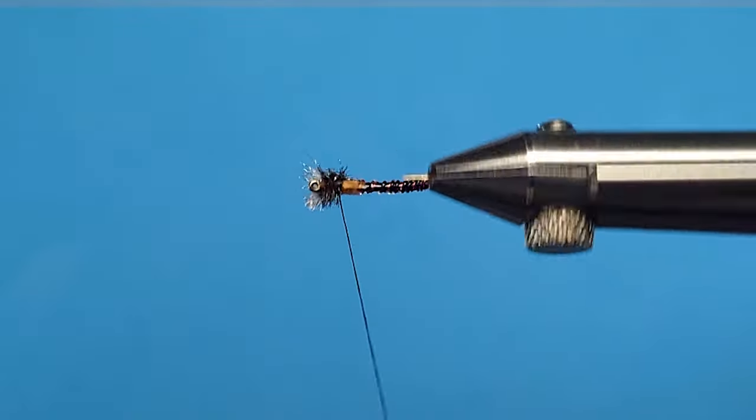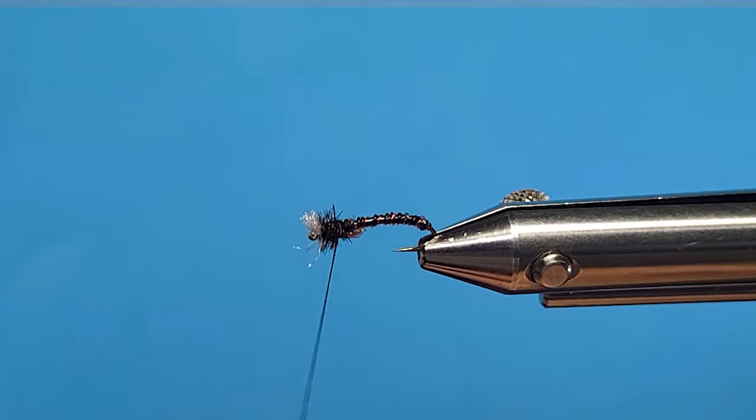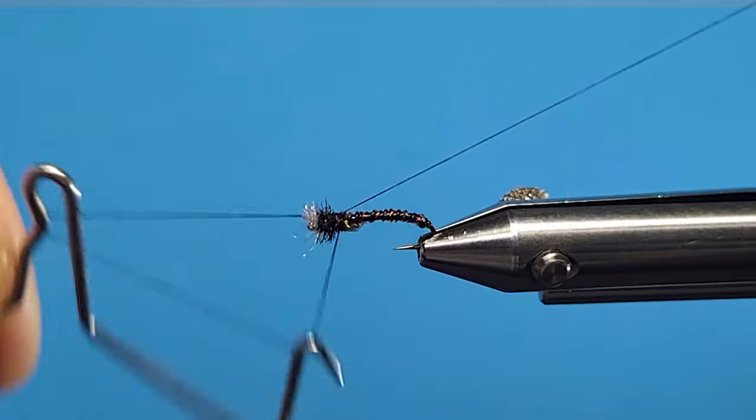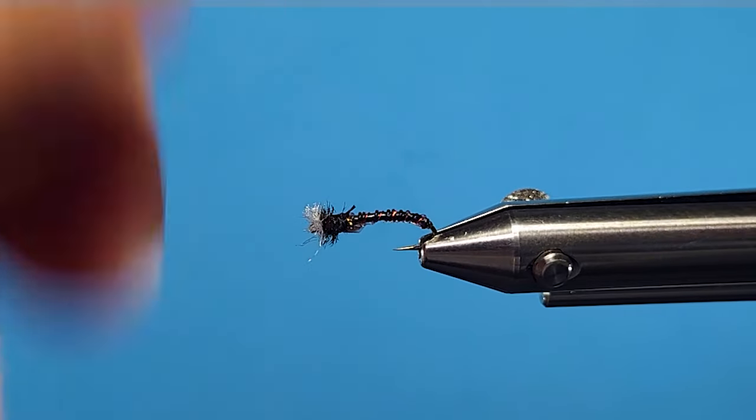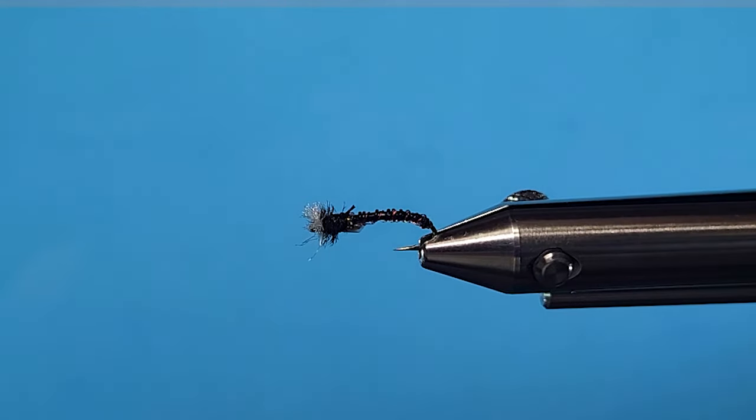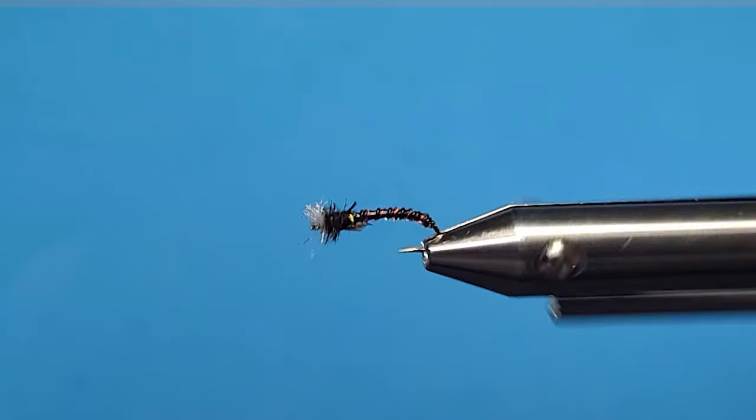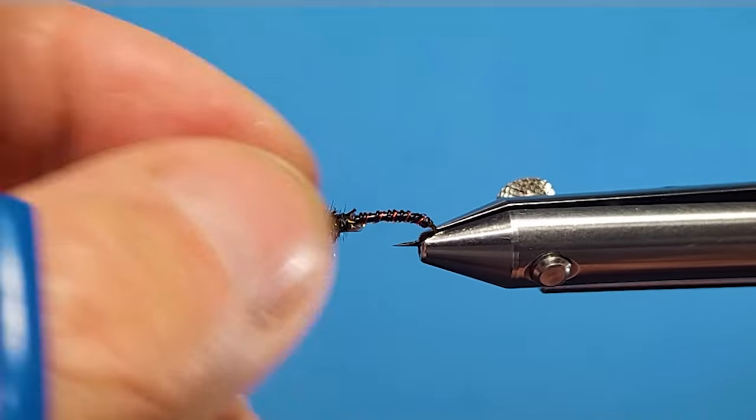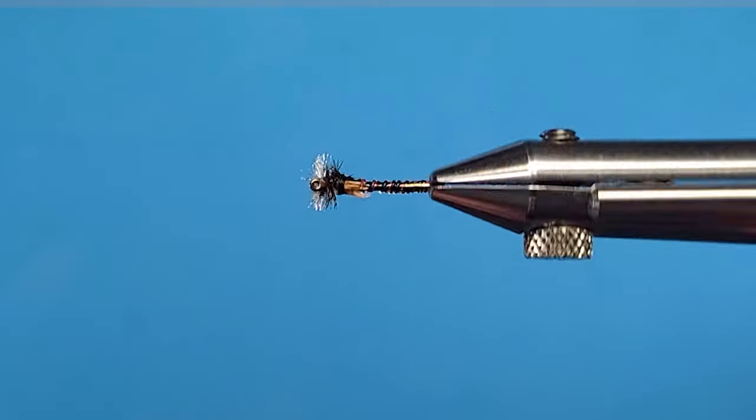Wing buds are still hanging in there okay. I just got a couple turns there. We'll finish. Put a little dab of cement on there if you like your head cement, something that'll soak in there. You don't need to put any resin or anything on this fly. It's going to be durable as it is.